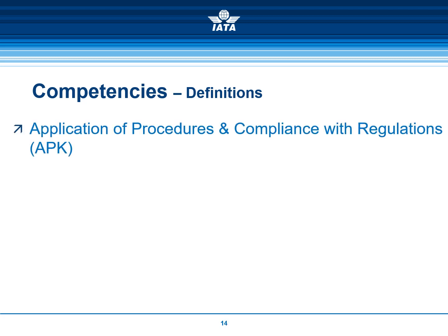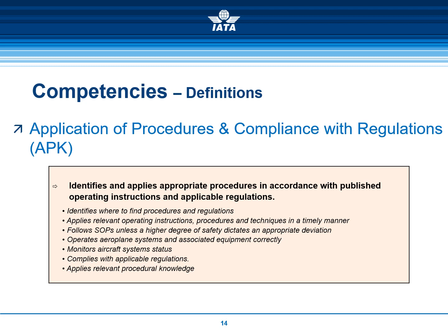The competency Application of Procedures and Compliance with Regulations (APK) is described as: identifies and applies appropriate procedures in accordance with published operating instructions and applicable regulations. Note the difference between APK and KNO with the following example: if the pilot monitoring omitted to perform a deviation call-out and the report states he considered call-outs pointless, the weak competency is APK. But if the report states he was unable to recall the value triggering the call-out, the weak competency is Application of Knowledge.